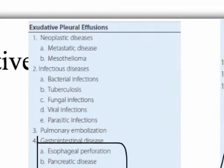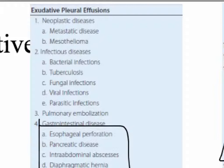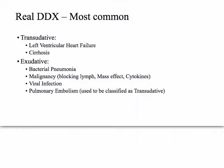In the United States, almost 90% of exudative effusions are due to pneumonia or cancer — neoplasm and infection. So the real high-yield differential is: left heart failure and cirrhosis for transudative; and pneumonia and malignancy for exudative.